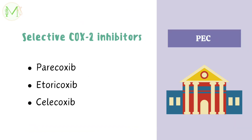Moving on to selective COX-2 inhibitors: parecoxib, etoricoxib, and celecoxib are drugs under this class. The mnemonic is PEC, which stands for Pondicherry Engineering College — imagine selecting PEC college, so PEC stands for parecoxib, etoricoxib, and celecoxib. This group of drugs has very minimal or no gastric side effects, as they are not involved in COX-1 inhibition.